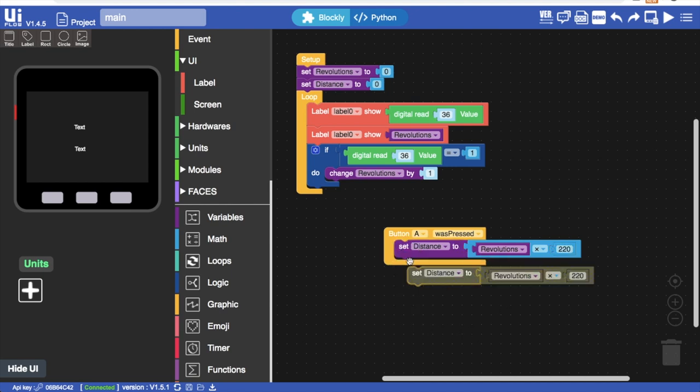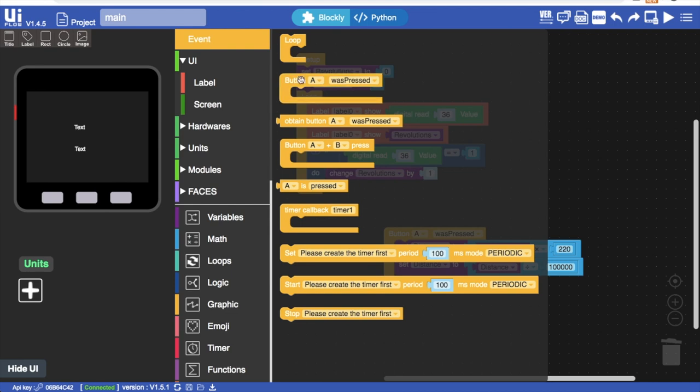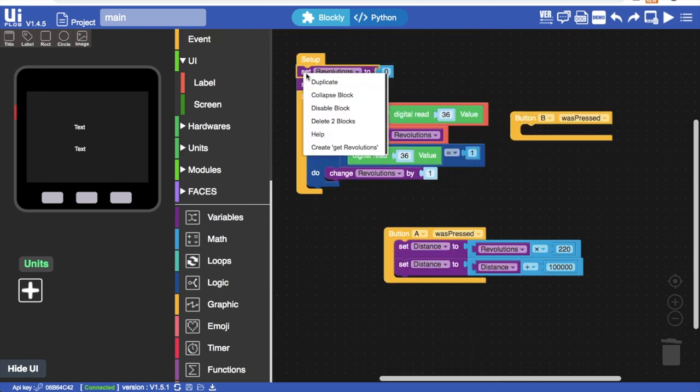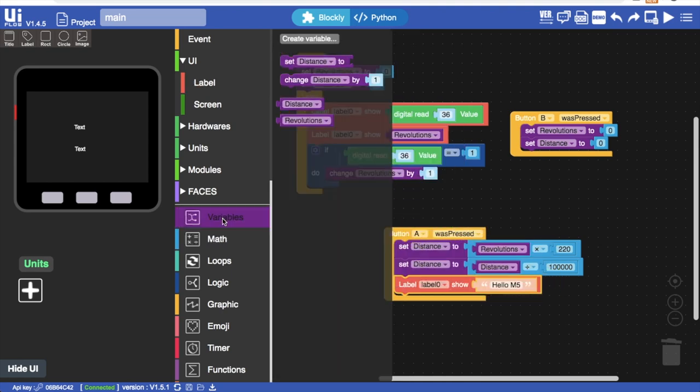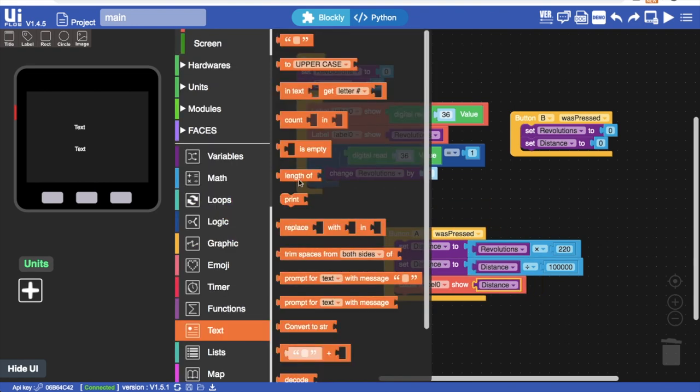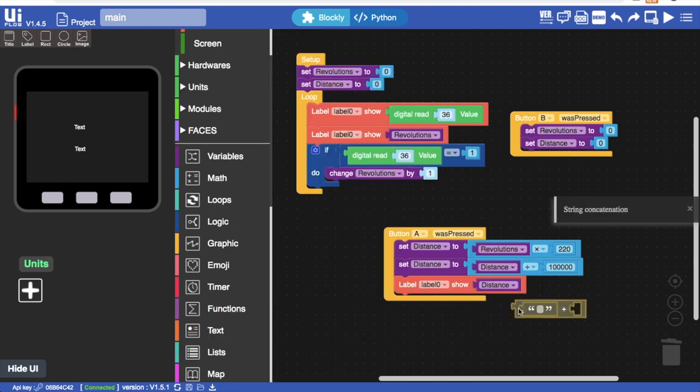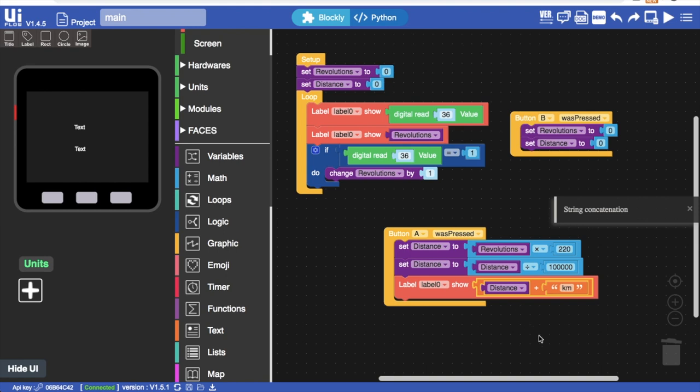In order to get the amount of distance in kilometers that we've traveled we'll need to convert centimeters into kilometers. We can do this by dividing distance by 100,000. To reset our bike computer back to zero we can use a B button pressed event to clear the variables back to zero. Lastly we'll need to add another label to the screen and then add a label UI block to display distance traveled and then we can use this block from the text section to add kilometers after that number. Make sure to change the label number for this label. And now we're ready to test.